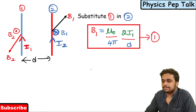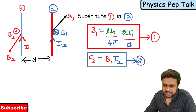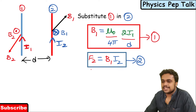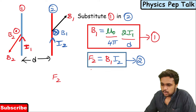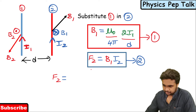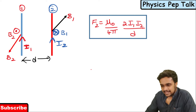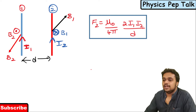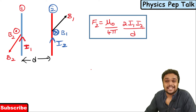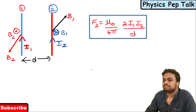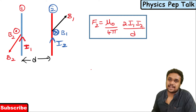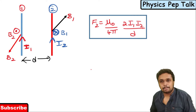Substituting Equation 1 into Equation 2: B1 = μ0/4π × 2I1/D and F2 = B1 × I2. Therefore, the required expression for the force experienced by conductor 2 due to the magnetic field produced by conductor 1 is: F = μ0/4π × 2I1I2/D.